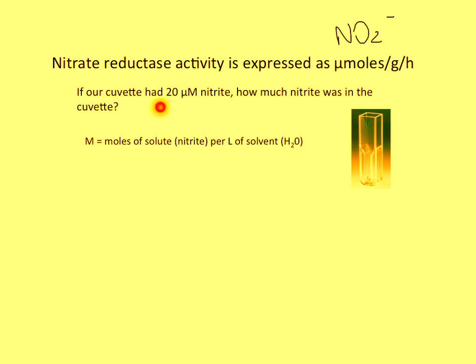Let's say from the standard curve we found that one of our samples had 20 micromolar nitrite. We want to know how much nitrite was actually in the cuvette. This is a concentration — micromoles is an amount — so we have to remember how to get back and forth between concentrations and amounts. Recall from chemistry that a molar solution refers to moles of solute per liter of solvent. So a 20 micromolar solution means 20 micromoles of nitrite per liter.